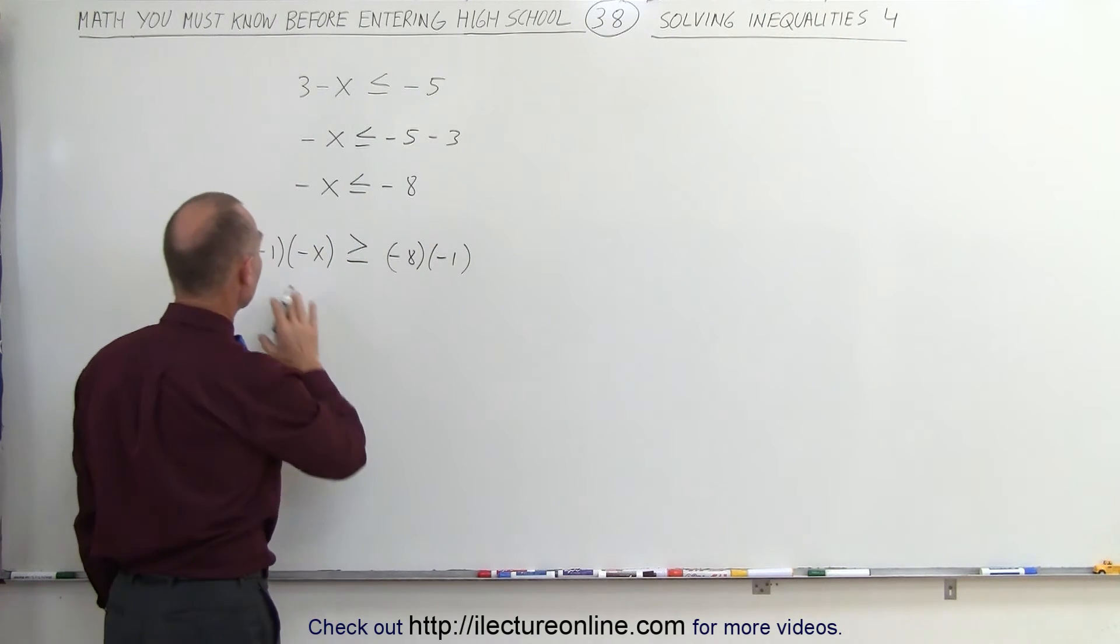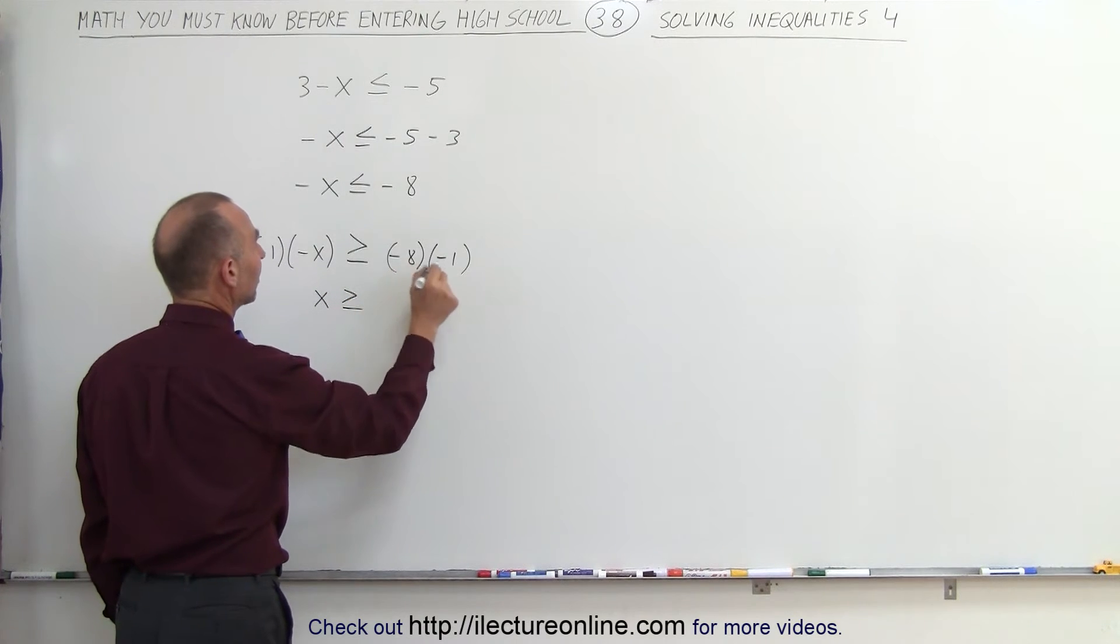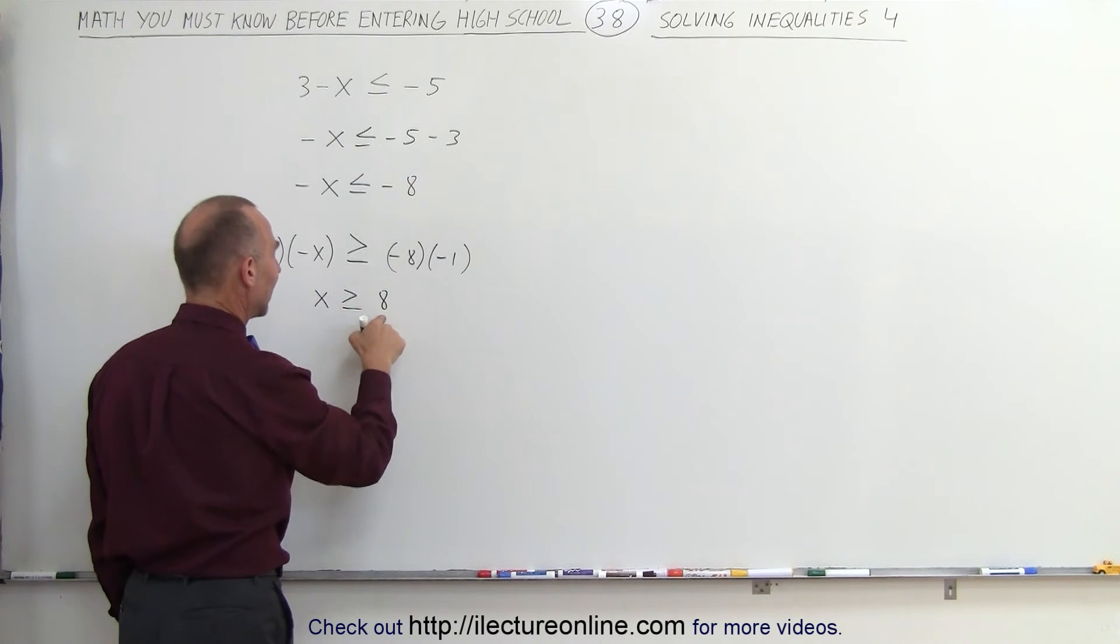So now we continue. Negative 1 times negative x is x, greater than or equal to negative 8 times negative 1, which is positive 8. And this is the answer. X must therefore be greater than or equal to 8.